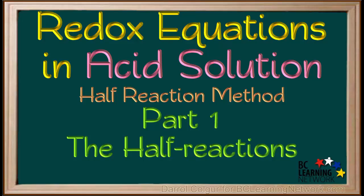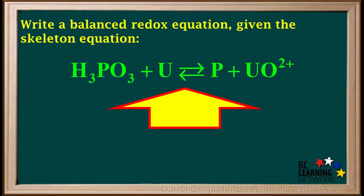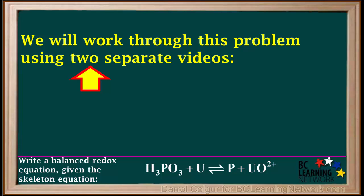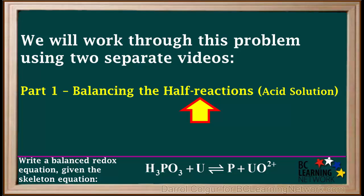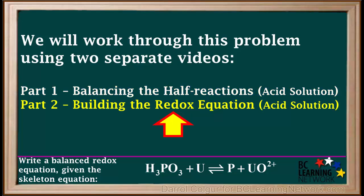Here, we'll go through an example of balancing a redox equation in acid solution using the half-reaction method. We're asked to write a balanced redox equation given the skeleton equation H3PO3 plus U gives P plus UO2+. We will work through this problem using two separate videos. In this video, part 1, we'll split the skeleton equation into two half-reactions and balance them in acid solution. In the next video, part 2, we'll use these half-reactions to build the overall redox equation.